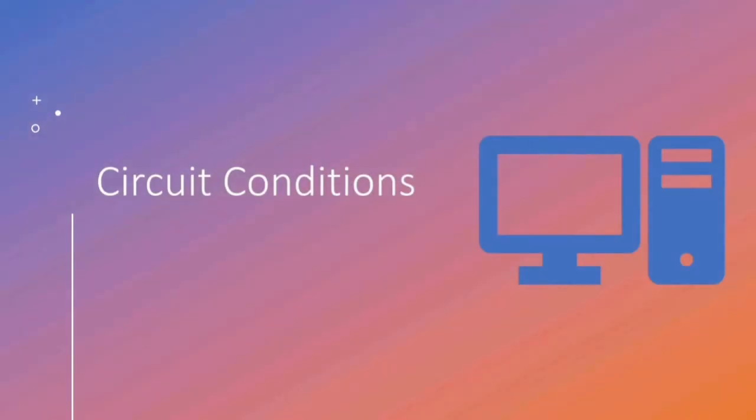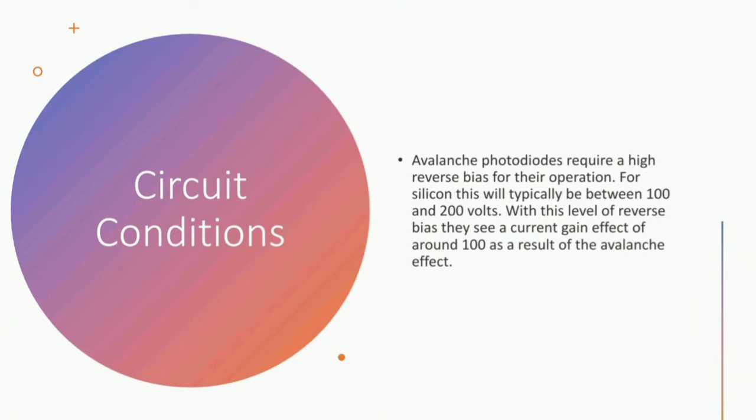Now let us know the circuit conditions for the avalanche photodiode. Avalanche photodiode require a high reverse bias for their operation. For silicon, this will typically be between 100 and 200 volts.